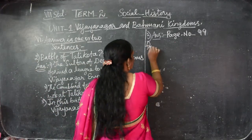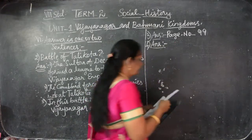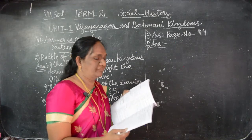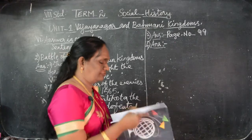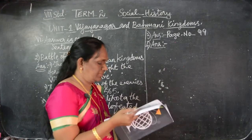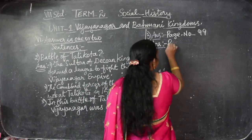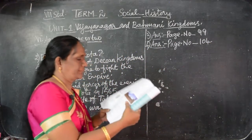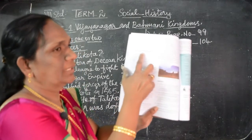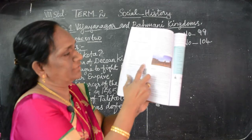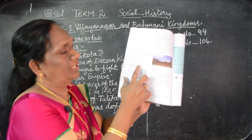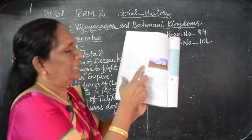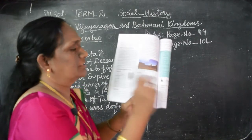Then the fourth short answer — the five independent kingdoms of the Deccan Sultanate. It is on page number 104. All take page number 104. Here — decline of Bahmani Kingdom — this paragraph. The last line: Bidar, Bijapur, Ahmadnagar, Berar, and Golconda. Till that you have to write.